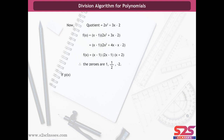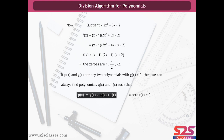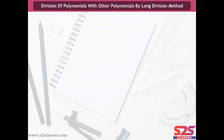Thus, if p(x) and g(x) are any two polynomials with g(x) ≠ 0, then we can always find polynomials q(x) and r(x) such that p(x) = g(x)·q(x) + r(x), where r(x) = 0 or the degree of r(x) is less than the degree of g(x). This is the Division Algorithm for polynomials.